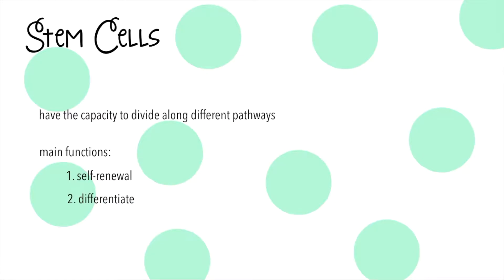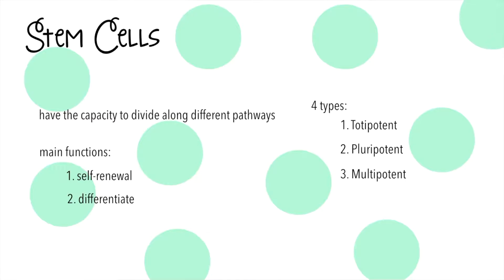There are four types of stem cells. Totipotent stem cells can form into any cell type, even placental tissue. Pluripotent stem cells can form into any cell type but not placental tissue — an example is embryonic cells. Multipotent cells can differentiate into closely related cells. Lastly, unipotent cells cannot differentiate but can renew themselves — an example is muscle cells. As you can see, this goes in order of broadness in terms of what they can differentiate into.